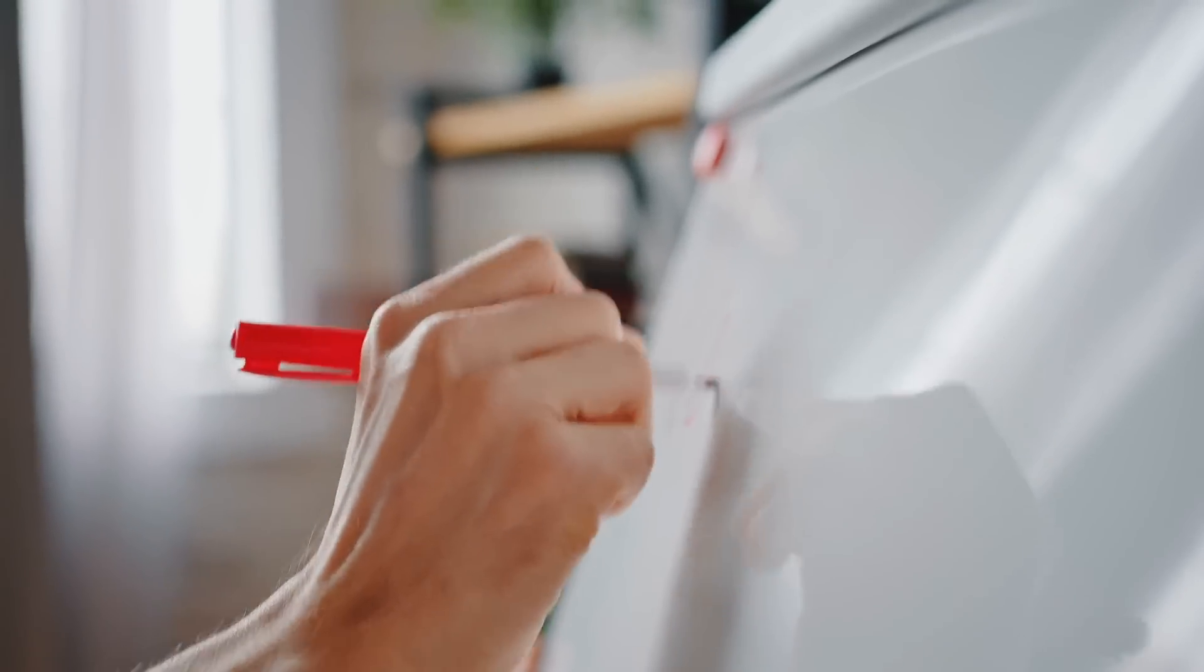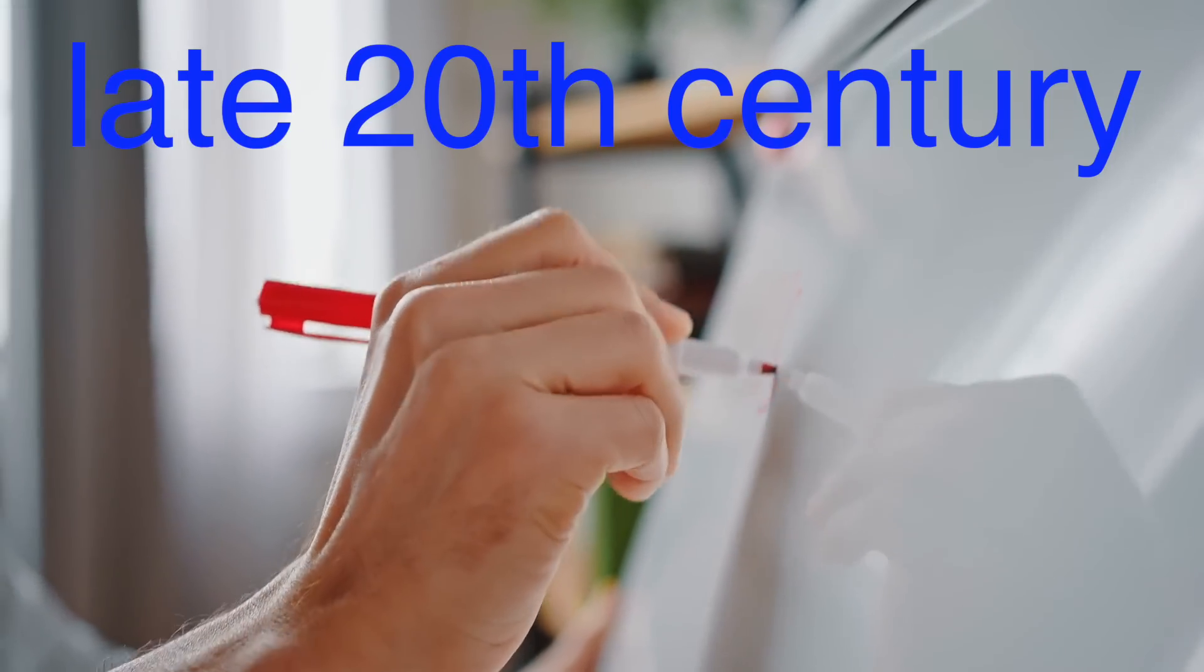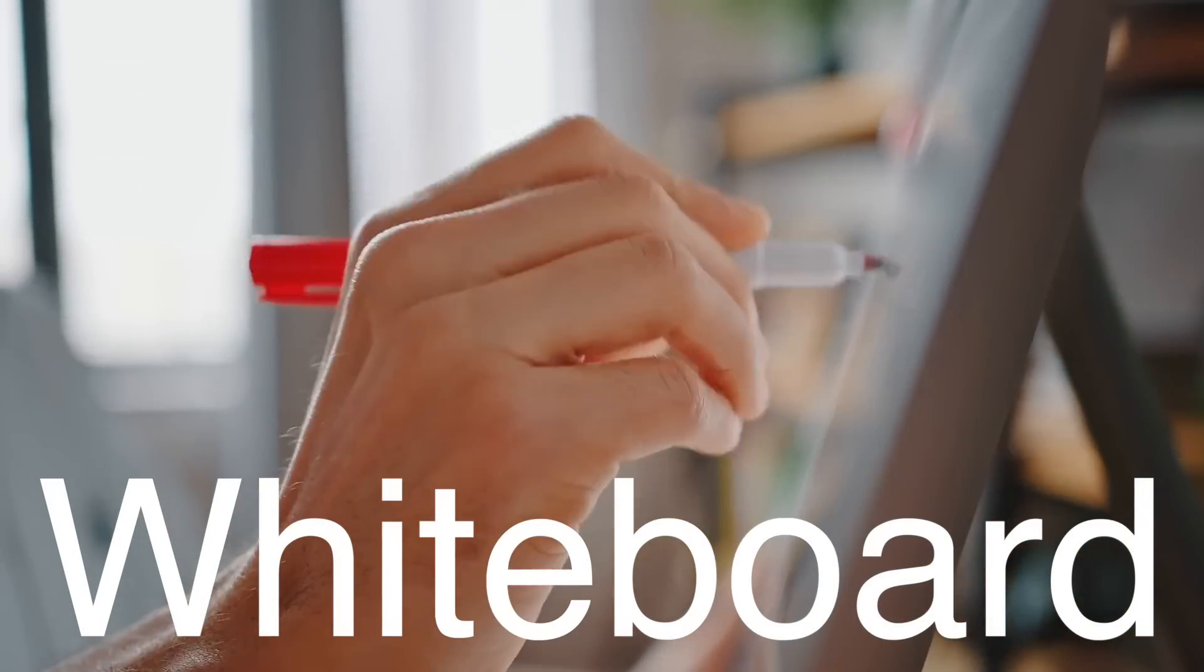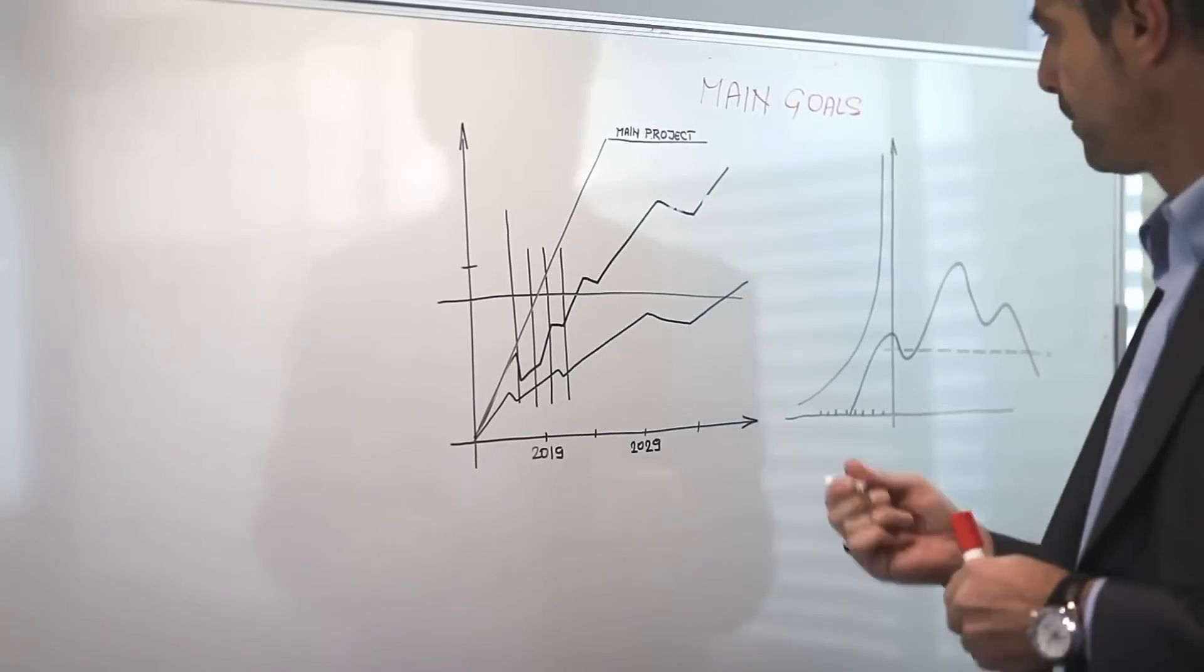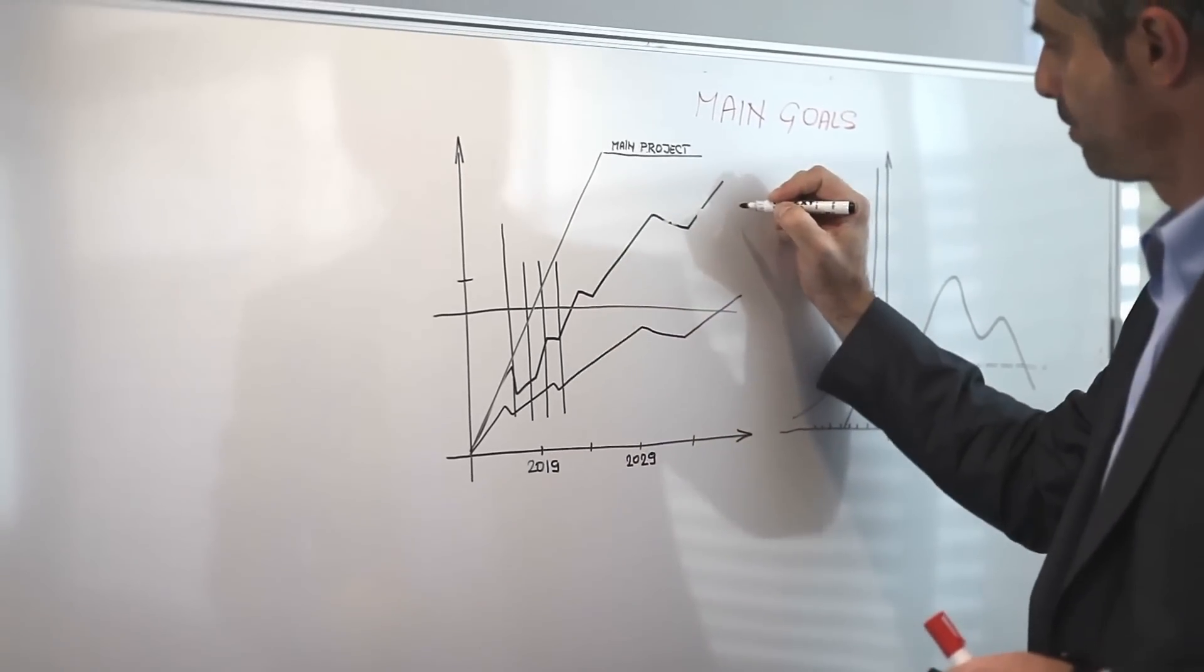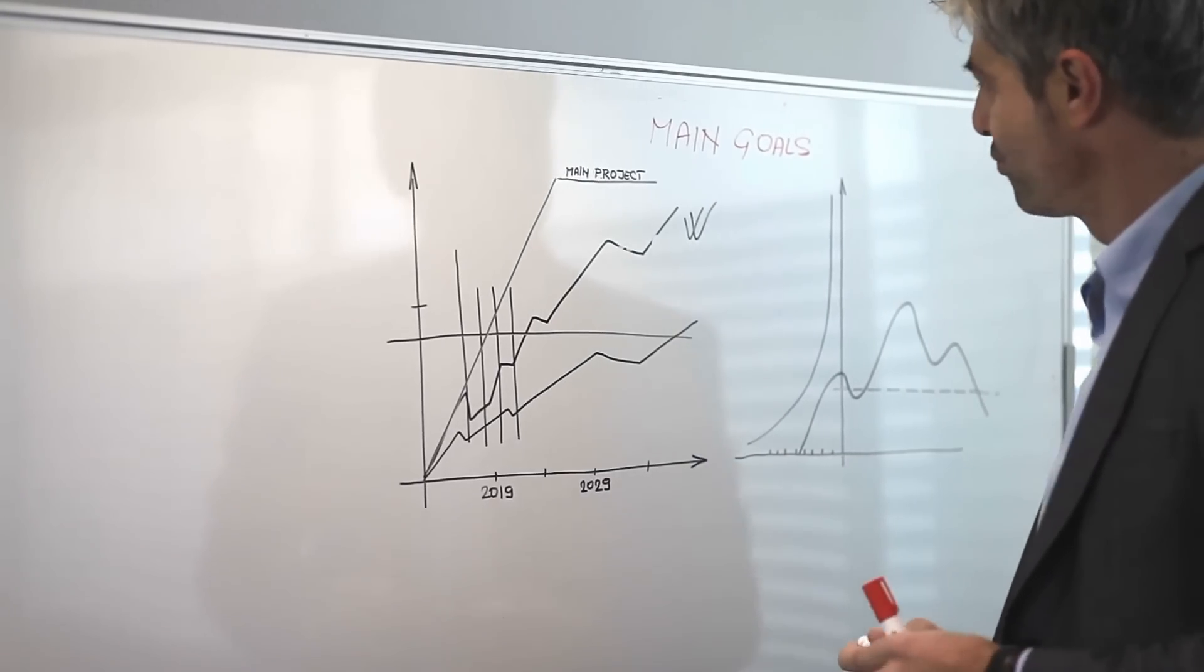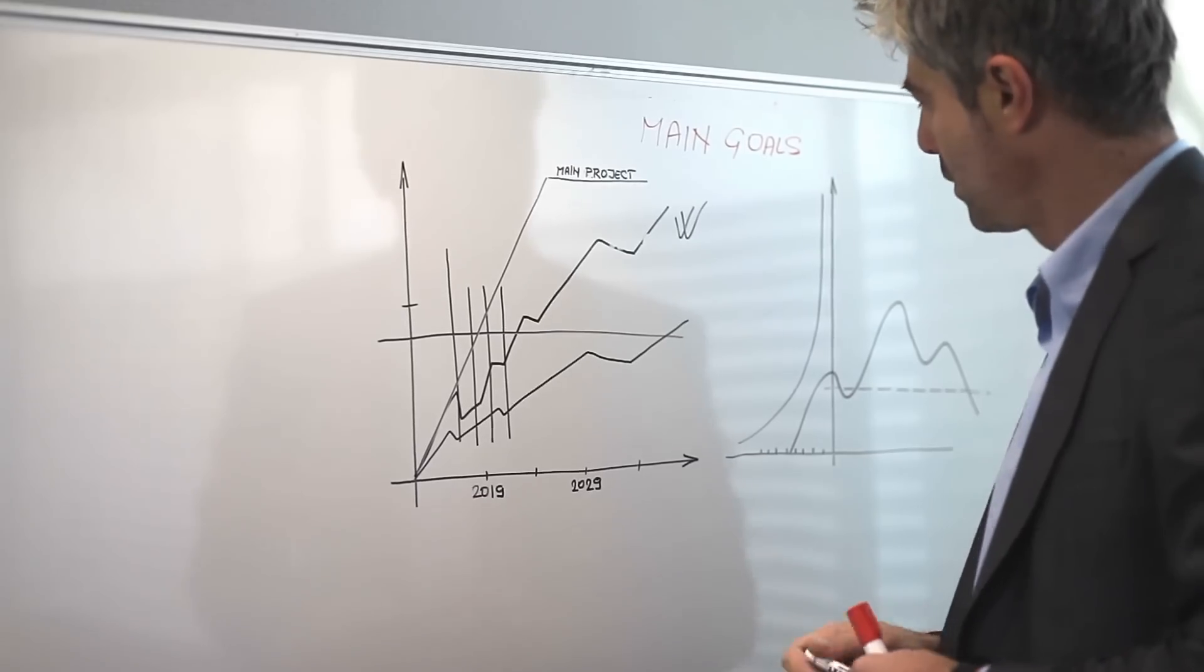While green chalkboards were dominant for decades, a new challenger emerged in the late 20th century, the whiteboard. Whiteboards, with their dry erase markers, took over classrooms and boardrooms by storm. Whiteboards are easier to clean, more modern-looking, and allow for colored markers, which makes lessons more dynamic. But despite the whiteboard revolution, green chalkboards didn't entirely disappear.